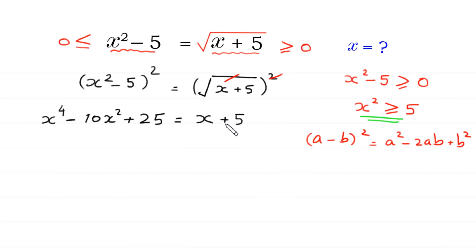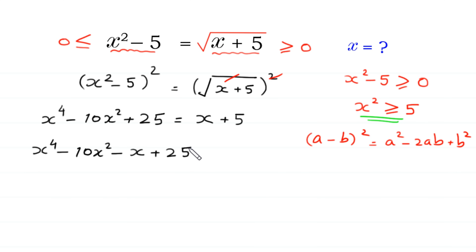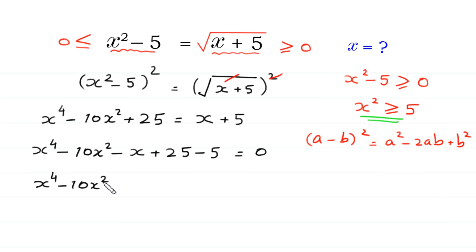Now we move x and plus 5 to the left side: x to the power 4 minus 10x squared, plus x becomes minus x, and 25 minus 5 becomes plus 20, giving x to the power 4 minus 10x squared minus x plus 20 is equal to 0.